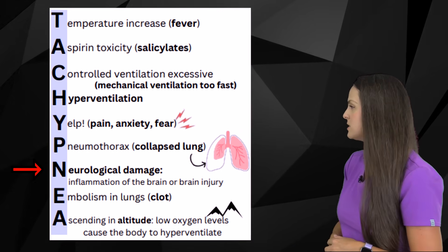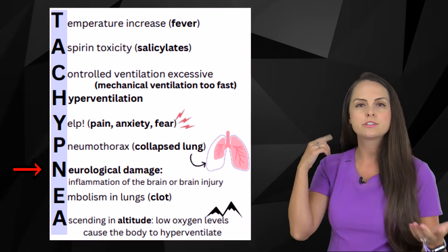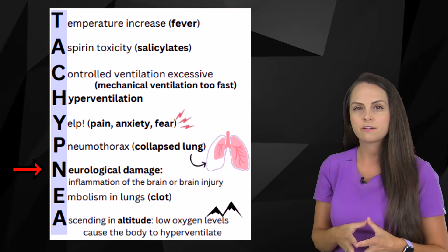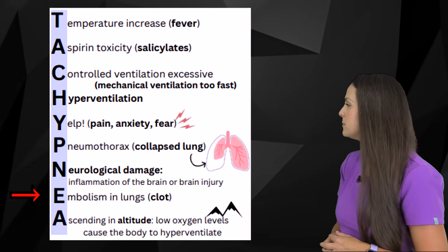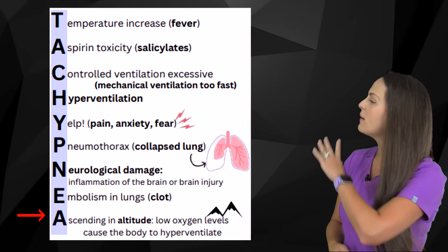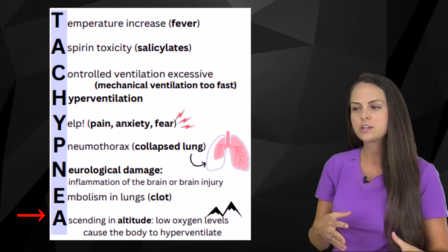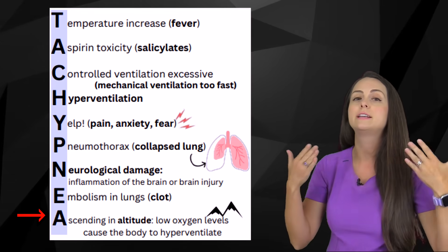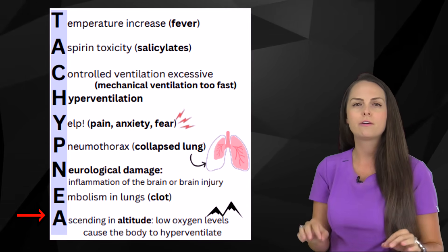N is for neuro change — inflammation of the brain or brain injury. Centers in our brain control respiratory rate, so if those are inflamed or damaged it can affect how the patient breathes, potentially causing an alkalotic state. E is for embolism in the lungs. A is for ascending altitude — when you go up in altitude you have low oxygen, so your body tries to hyperventilate to take in more oxygen, but when hyperventilating you blow off too much CO2.